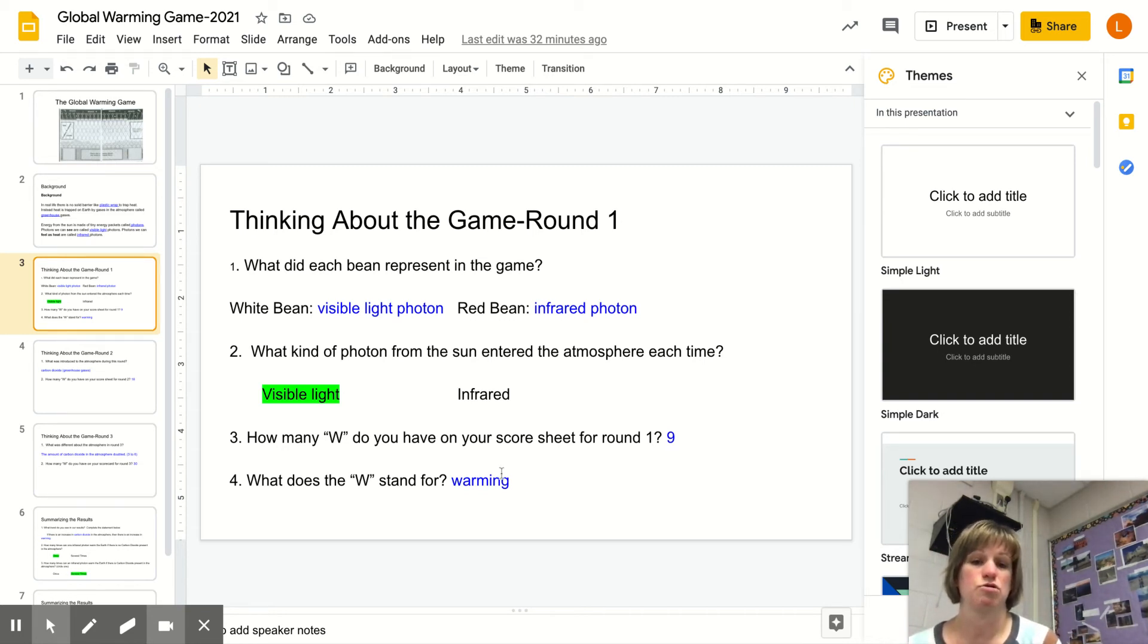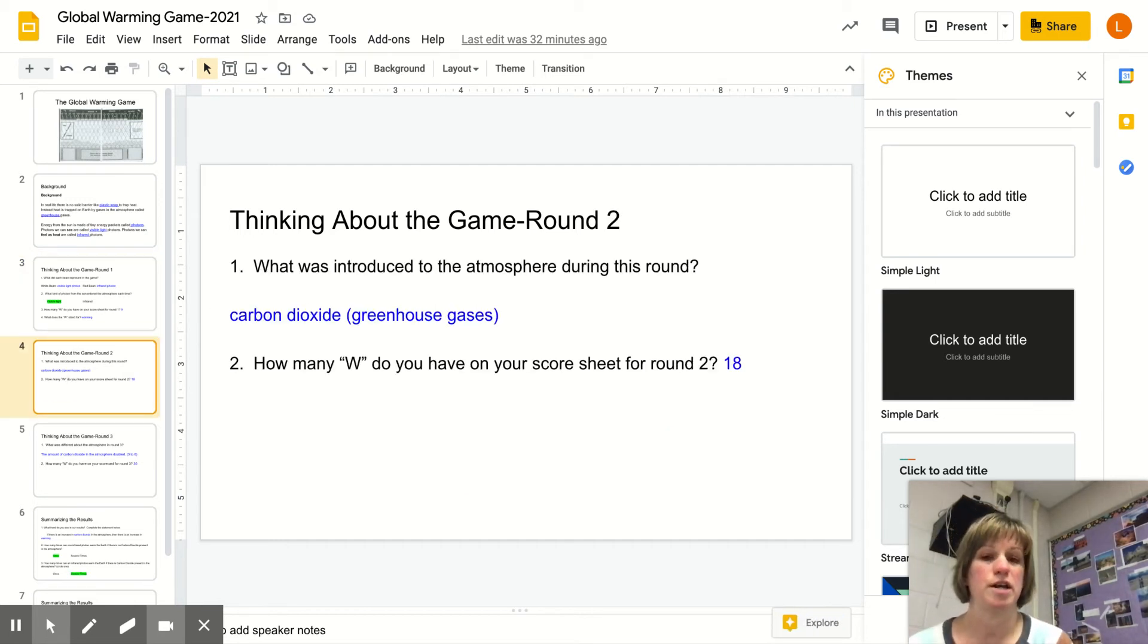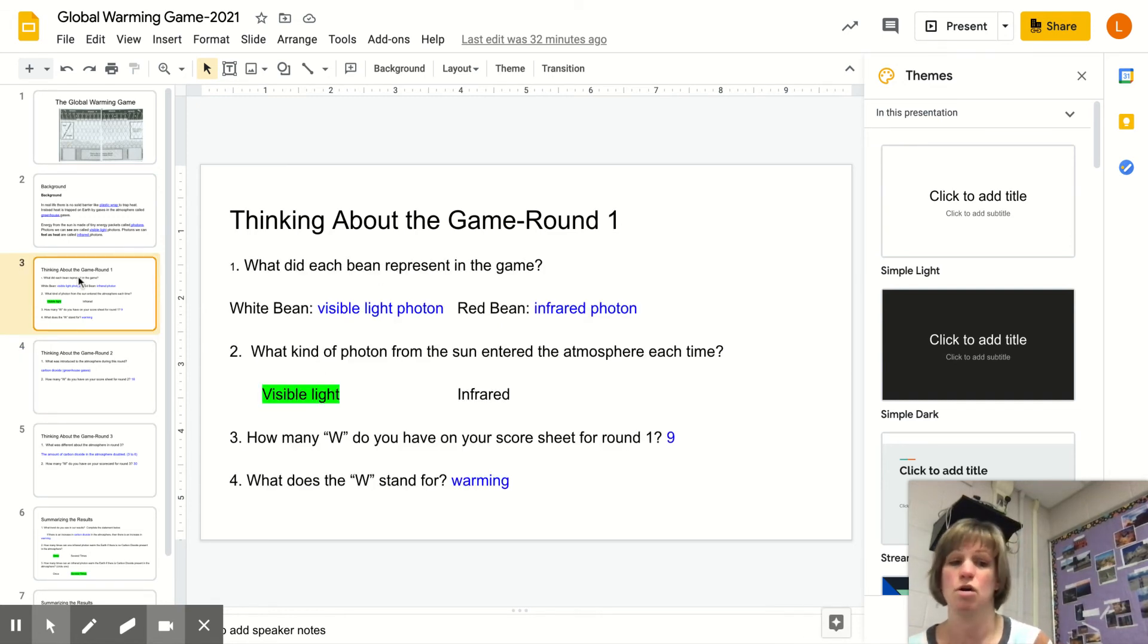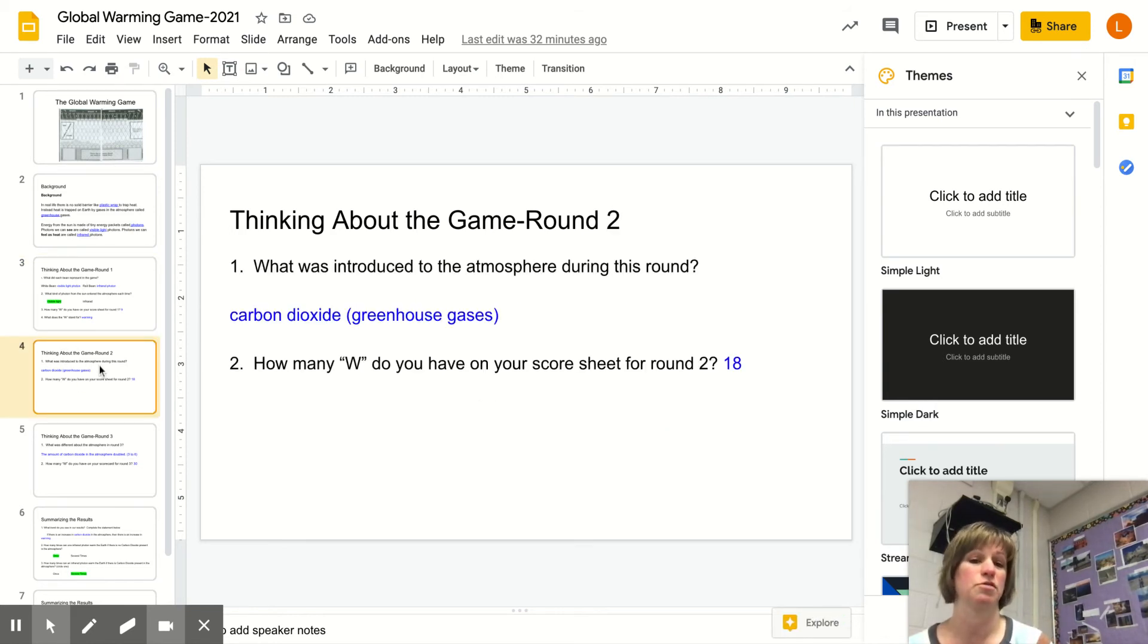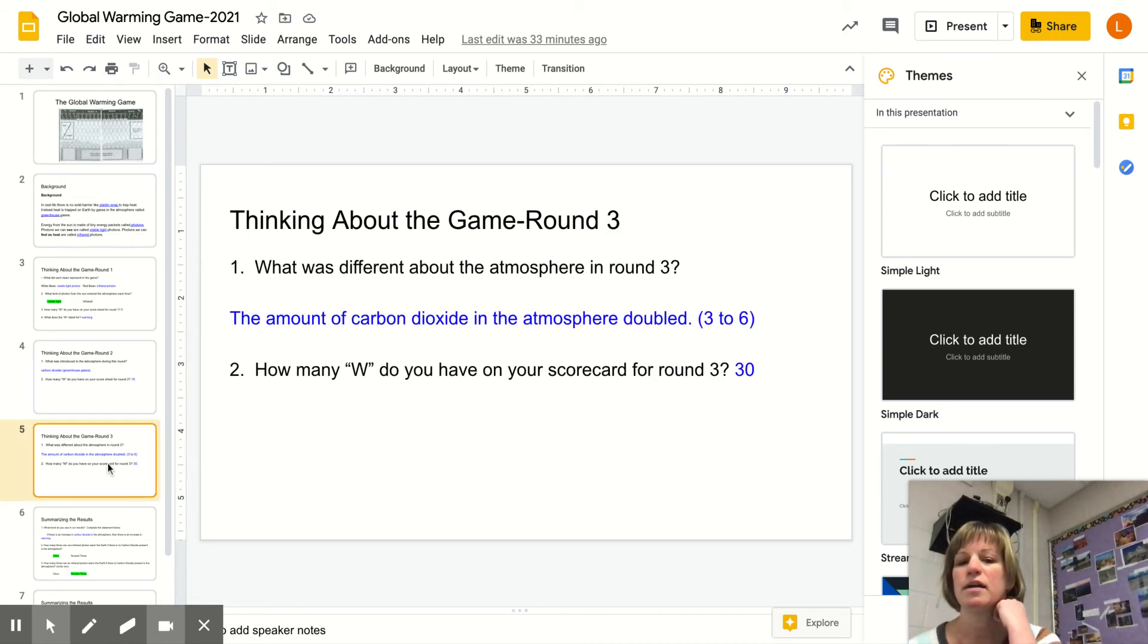The right answer for how many Ws in round one was nine. Remember, those Ws stand for warming. In round two, we changed something—we added carbon dioxide to the atmosphere. Carbon dioxide is the most important, but not the only, greenhouse heat-trapping gas. In round one, we had an atmosphere with no heat-trapping greenhouse gases at all. We added three, and your score should have been 18 Ws, 18 warming events.